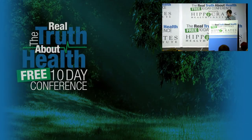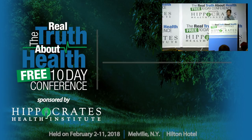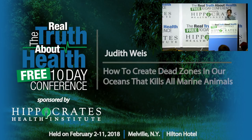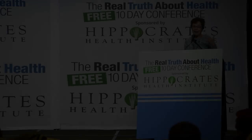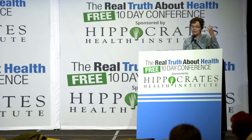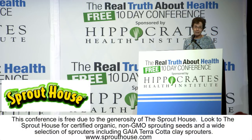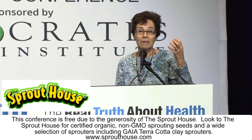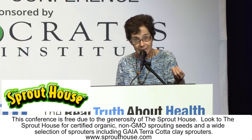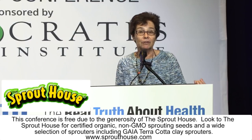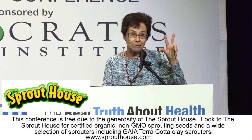Thanks very much. I'm delighted to be here and share with you some of this rather depressing information. The book and the talk sort of follows the book. The approach I take is different kinds of pollution taken one at a time, and for each kind of pollution: where it comes from, what it does, and what might we be able to do about it. So those are three aspects for each type of pollution.